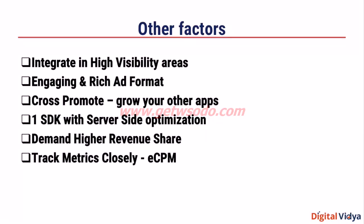Last but certainly not the least, make sure that you track your metrics very closely. The only way you will know your performance is by looking at your eCPM — Effective Cost Per Thousand Impressions. This means that for every thousand times you had an opportunity to show an ad, how much money did you earn? Irrespective of which ad provider you're using, or if you're comparing multiple different ad providers, this metric is of great value. Similar to how we compared different ad campaigns using the eCPI metric — the Effective Cost Per Install — when you're trying to earn revenue from advertising, you should look at your eCPM.